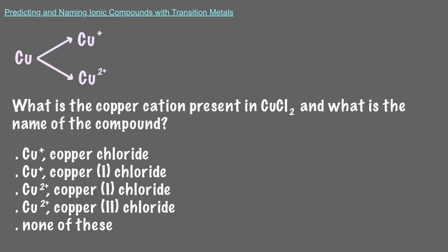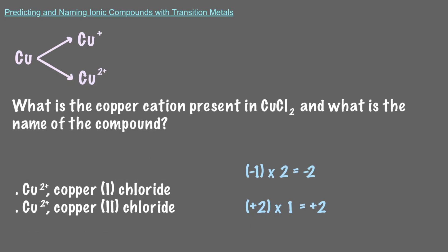We know that chlorine always makes an anion with a negative 1 charge, because it's in group 17 of the periodic table. Since we have 2 chloride ions, we have a total of 2 negative charges in the compound. Therefore, our copper cation needs to have a positive 2 charge to balance out the negative charges. That means the cation present in this compound is Cu2+, and its name is copper (II) chloride.